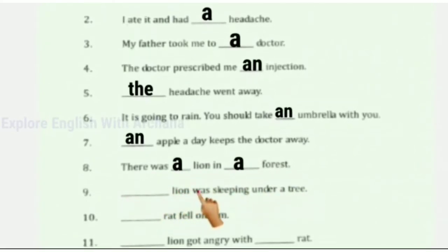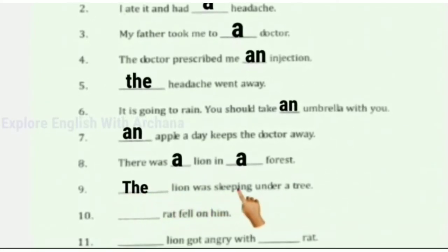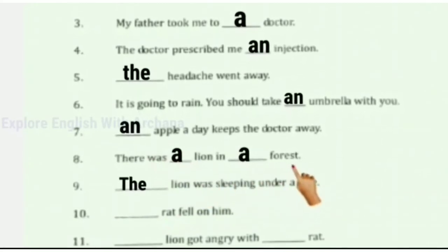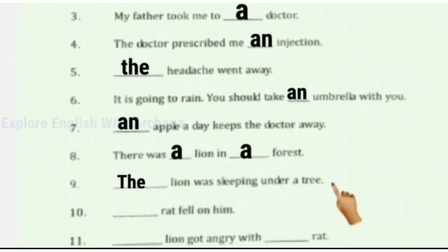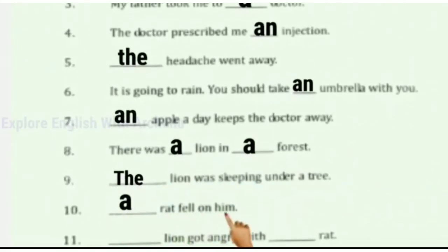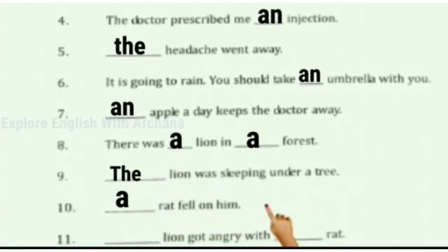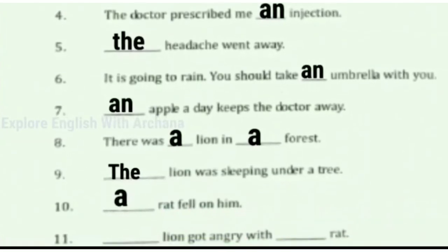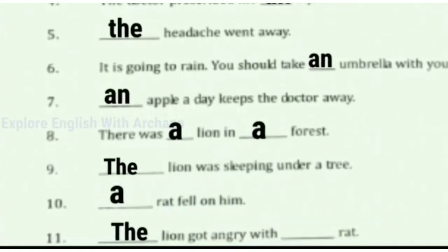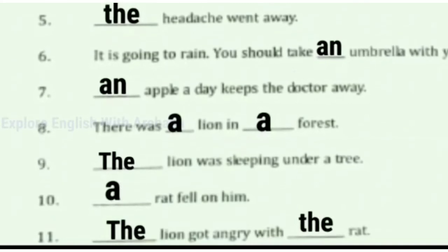There was a lion in a forest. The lion was sleeping under a tree. We're talking about the specific lion that was in the forest. The lion was sleeping under a tree. A rat fell on him. The lion got angry with the rat.